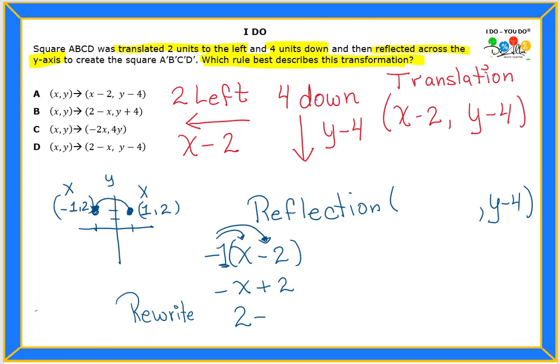And since that x is negative, then I write down minus x and that would be my x coordinate. Two minus x and y minus four. So look at this answer that I got and let's look at the answer choices that I have.